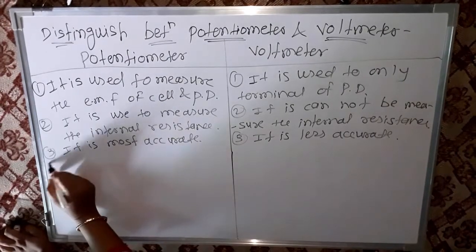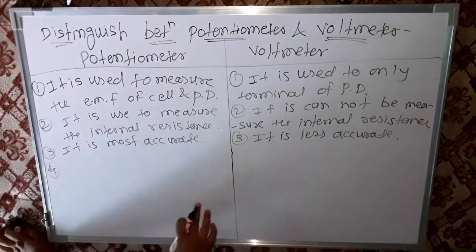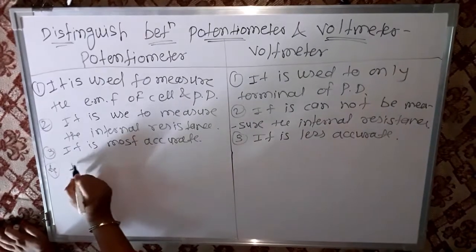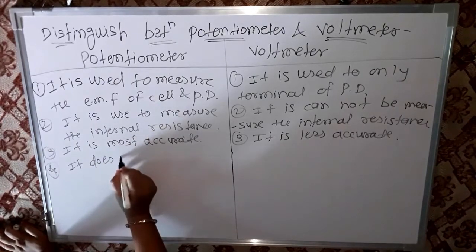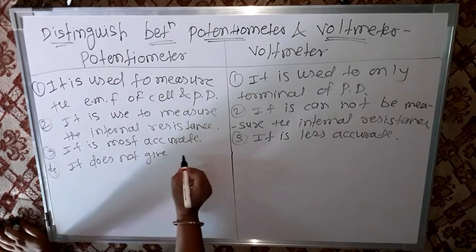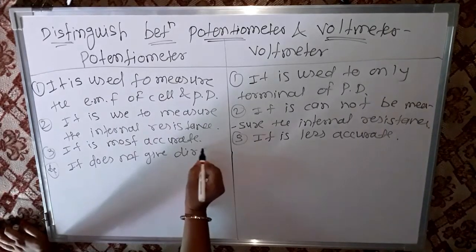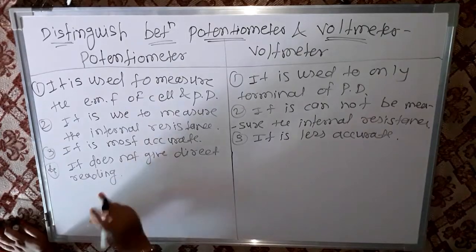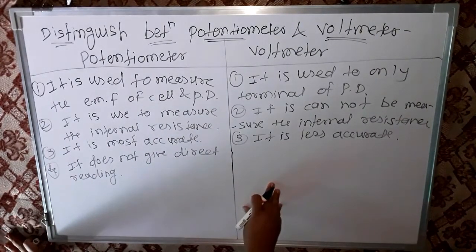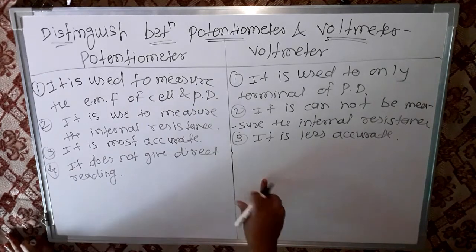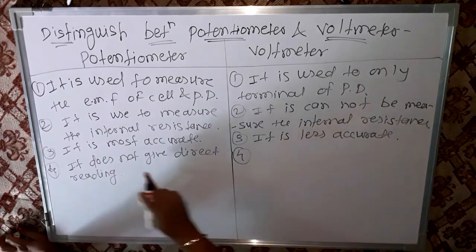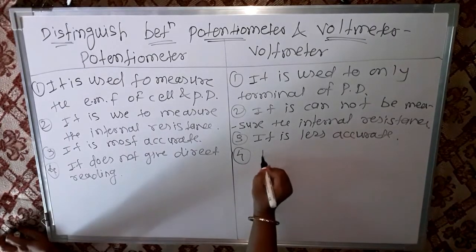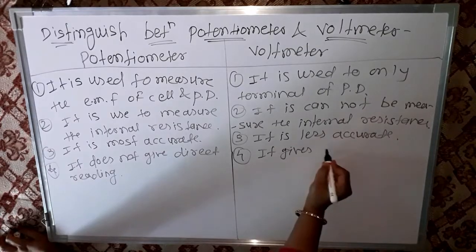Fourth point: the potentiometer does not give a direct reading. In contrast, the voltmeter gives a direct reading.